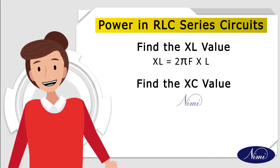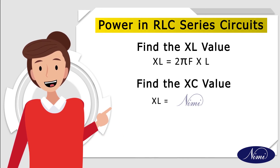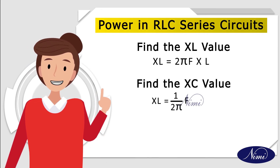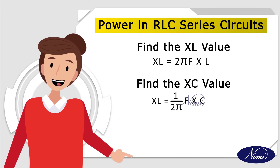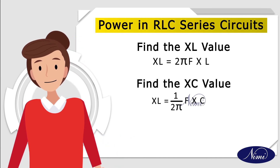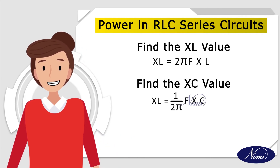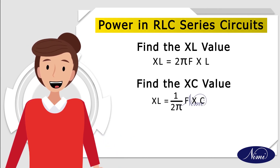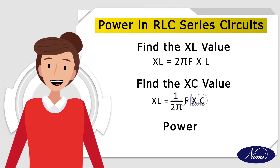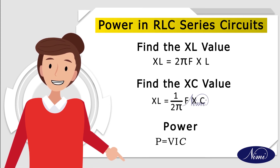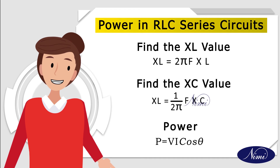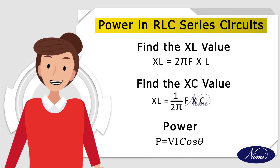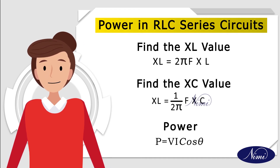From the known values of C and L, we can calculate X_C and X_L, then easily find Z. Power P equals V·I·cos theta, and from cos theta, current, and voltage, we can calculate the power value.